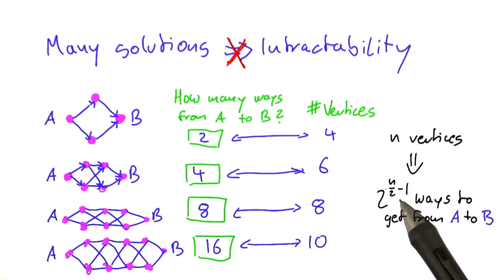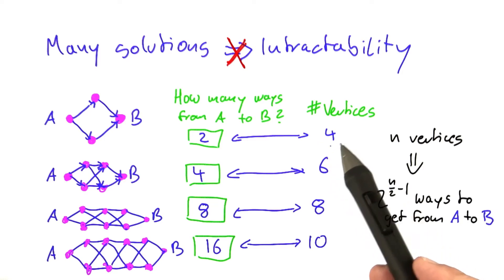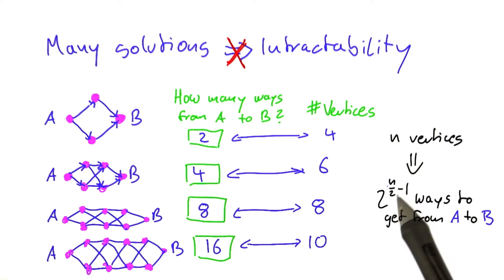The way you can see that this formula is correct is you can plug in 4 here. So it's 4 over 2, which is 2 minus 1, and 2 to the power of 1, that is 2.